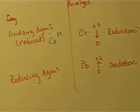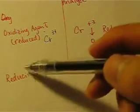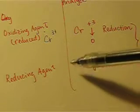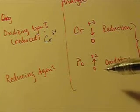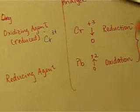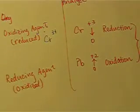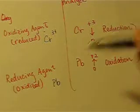Now let's look at the second term, reducing agent. Reducing agent means that it helps another compound to reduce. And in this case, it helps chromium to reduce. And itself would be oxidized. Therefore, reducing agent is Pb lead.